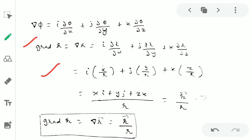That means gradient of R will be ∇R = i(∂R/∂x) + j(∂R/∂y) + k(∂R/∂z). So you are getting (xi + yj + zk)/R, which equals R vector divided by R. That means gradient of R is ∇R = R/R. So these are the basics.